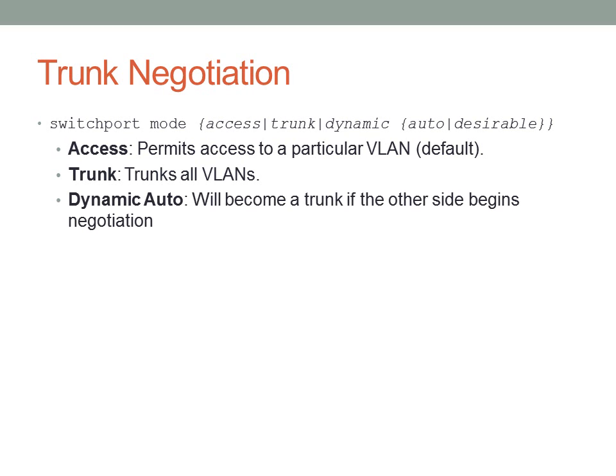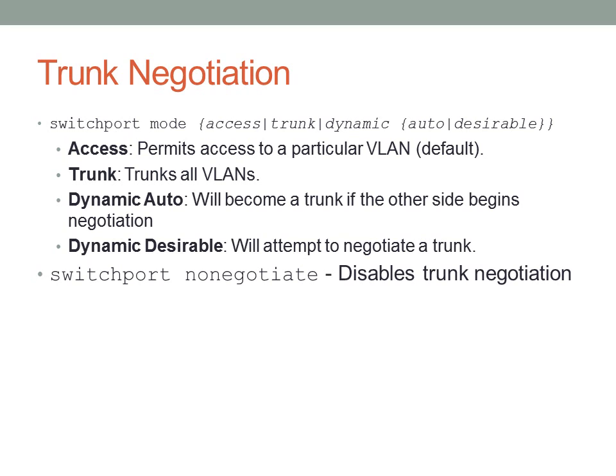Dynamic auto will become a trunk if the other side begins negotiation, but if that's not possible it will default to access mode. Dynamic desirable will actually attempt to initiate negotiation. So if you want to ensure a trunk port on two dynamic ports, at least one side must be configured as desirable. If both sides are configured as dynamic auto, negotiation will not take place and both ports will default to being access ports. You can also specify 'switchport nonegotiate' to completely disable trunk negotiation.